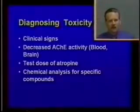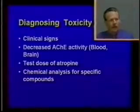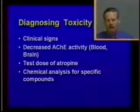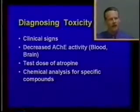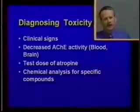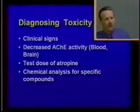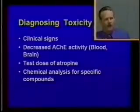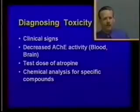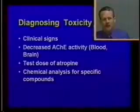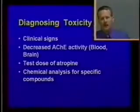To diagnose anticholinesterase insecticide toxicity, clinical signs are important. Probably the best evidence is decreased acetylcholinesterase activity, either in whole blood or in the brain. In a live animal, whole blood is the sample of choice; in a dead animal, send half the brain to a lab. Because it typically takes several days to get results on cholinesterase activity, a quicker way to tentatively diagnose anticholinesterase poisoning is a test dose of atropine.